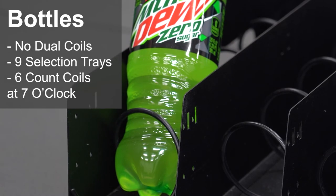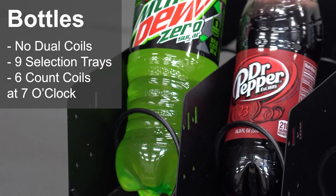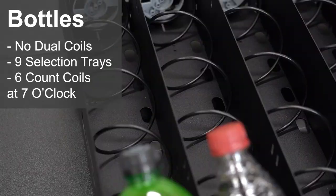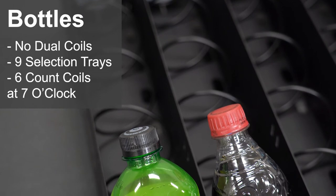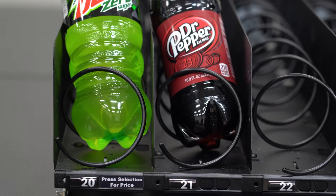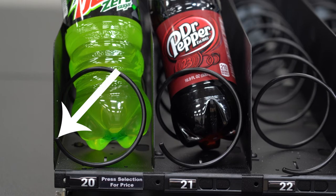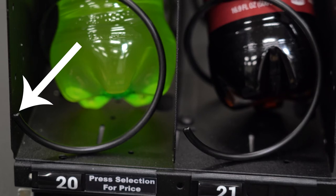Do not place bottles in dual coils. We recommend using a tray with nine selections across, not ten. Only use ten selection trays for small diameter beverages. Place six count coils at seven o'clock to prevent bottles from falling out when the tray is pulled out. Remove the two set screws on the top of the machine with the five.